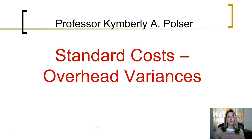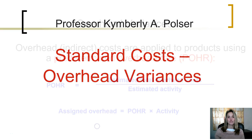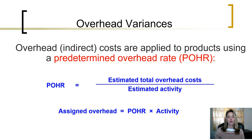In this segment, we will look at overhead variances from standards. Overhead, our indirect costs, are applied to products using a predetermined overhead rate. To calculate that predetermined overhead rate, we take the total estimated overhead cost and divide by some estimated activity.